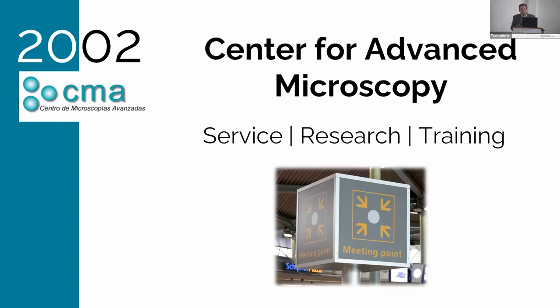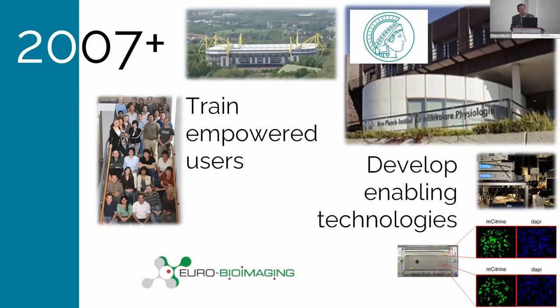The Center for Advanced Microscopy became a meeting point for different departments and disciplines — a place where people with very different backgrounds meet and need to build a common language. The second milestone was in 2007, when he started working in Dortmund at the Max Planck Institute. The diversity he was used to in the physics department was very small compared to what he saw in Dortmund.